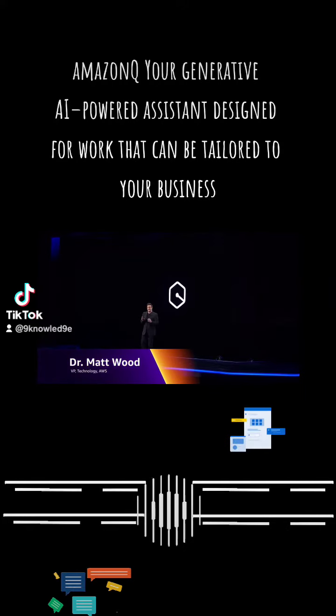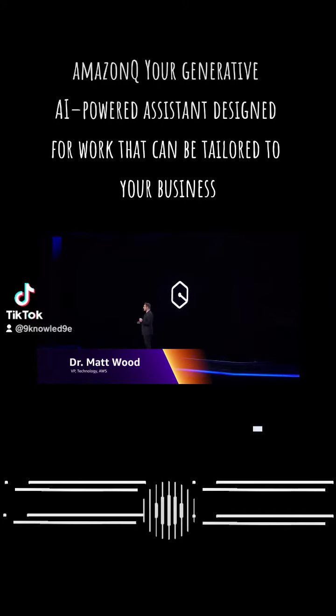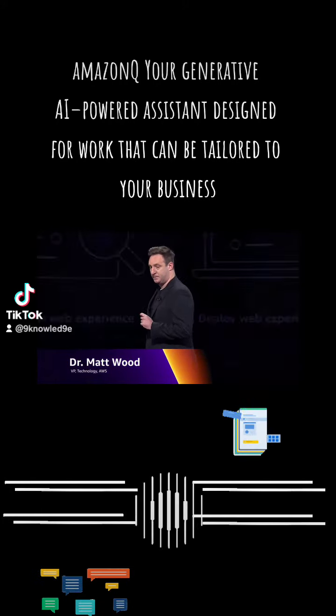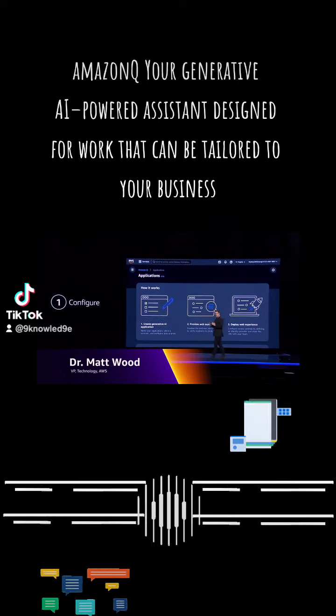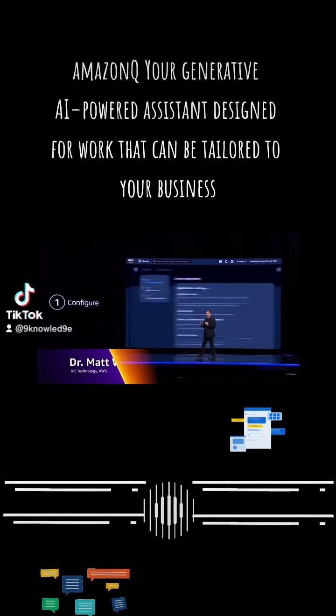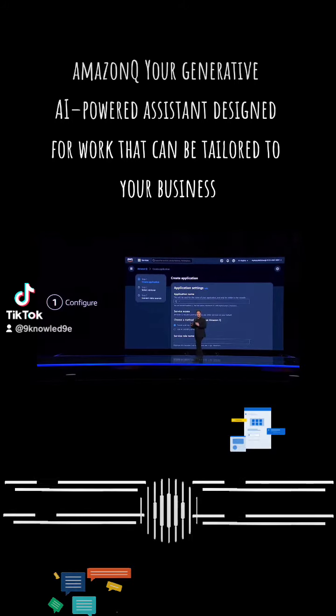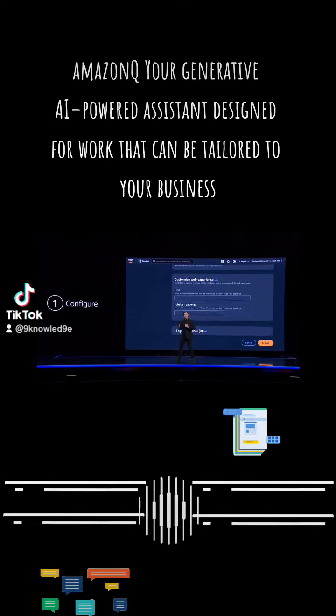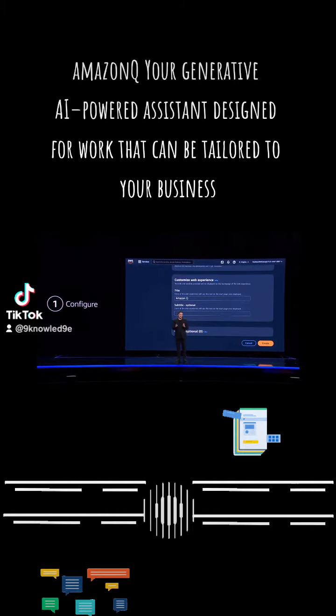Getting started with Q is simple and takes just three steps. First, you configure Amazon Q by connecting and customizing Q with details of your own organization.